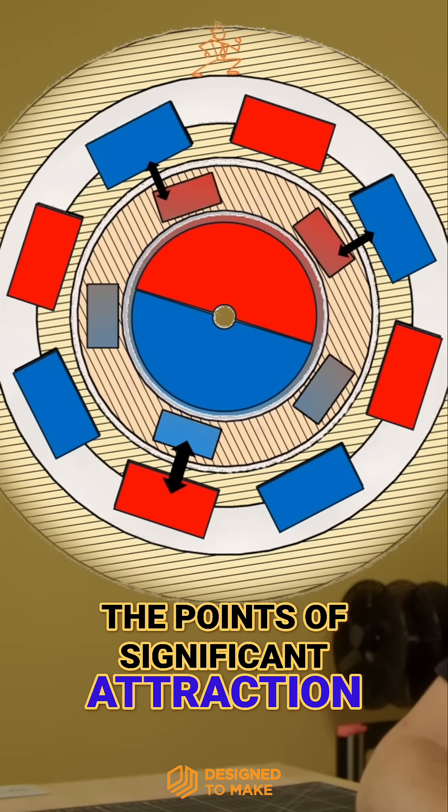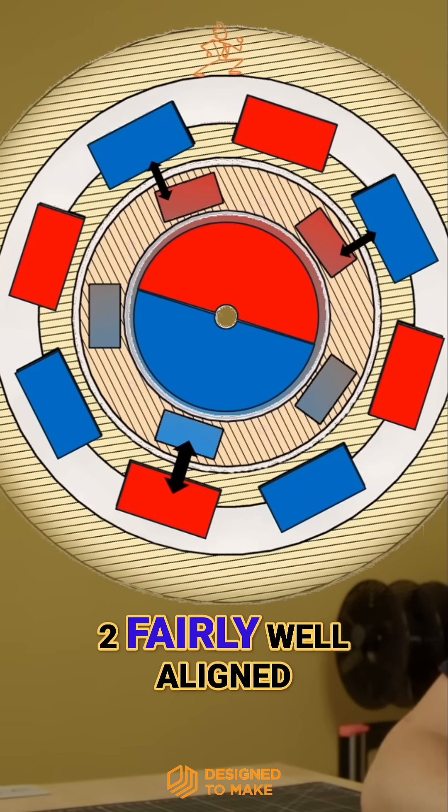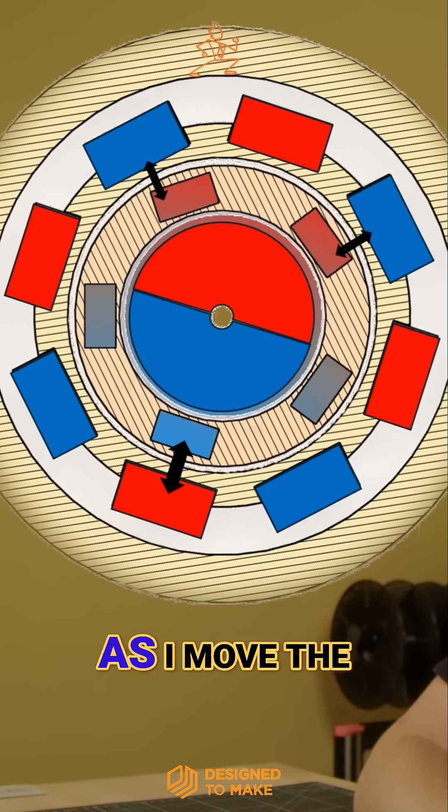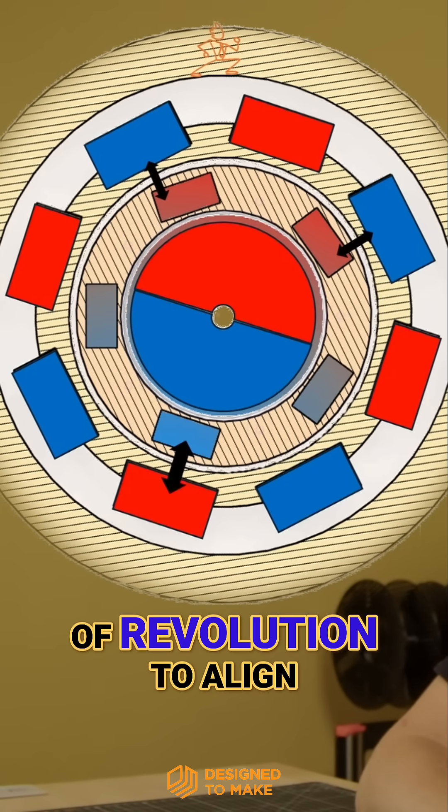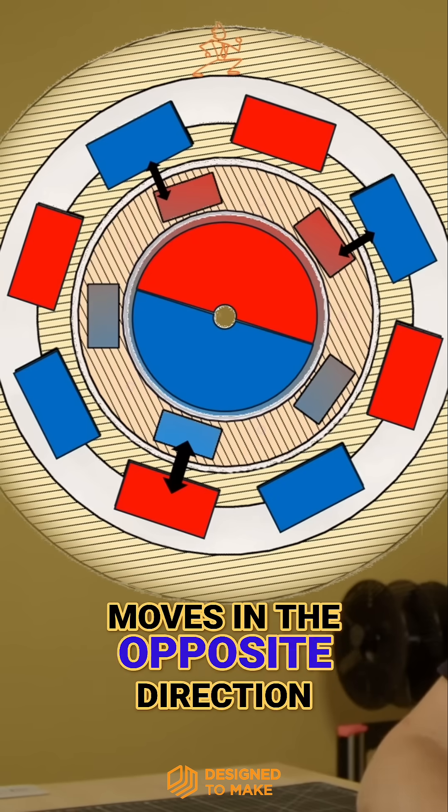Black arrows are the points of significant attraction, with one completely aligned north to south and two fairly well aligned to reach the lowest energy state. As I move the inner magnet one-fifth of a revolution to align with the next concentrator, the outer magnetic ring moves in the opposite direction.